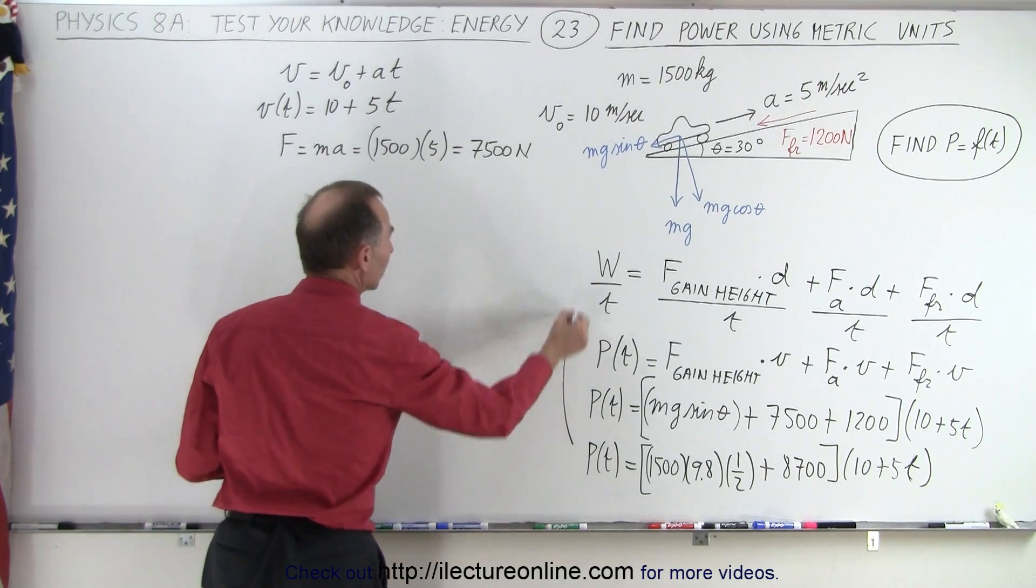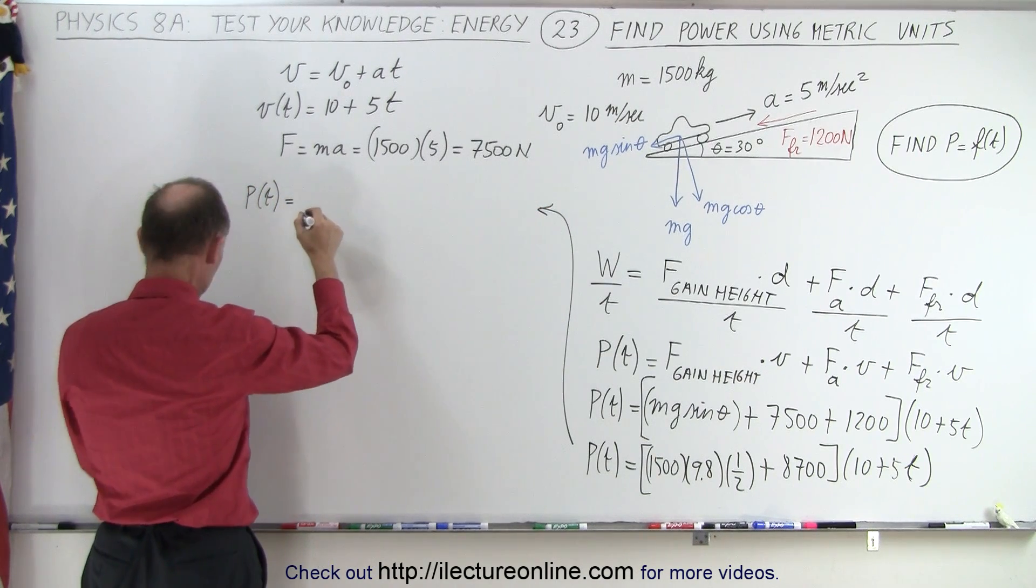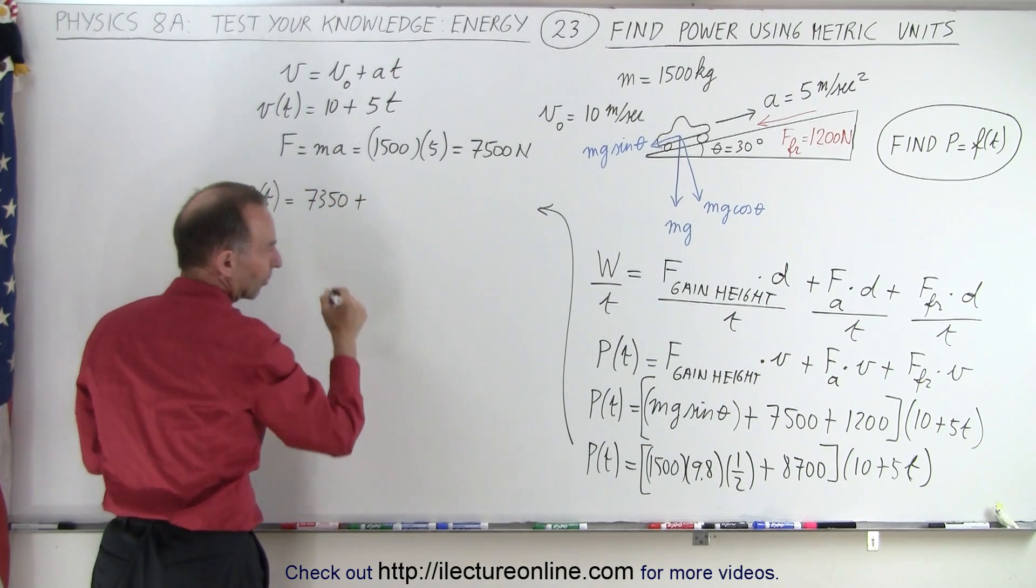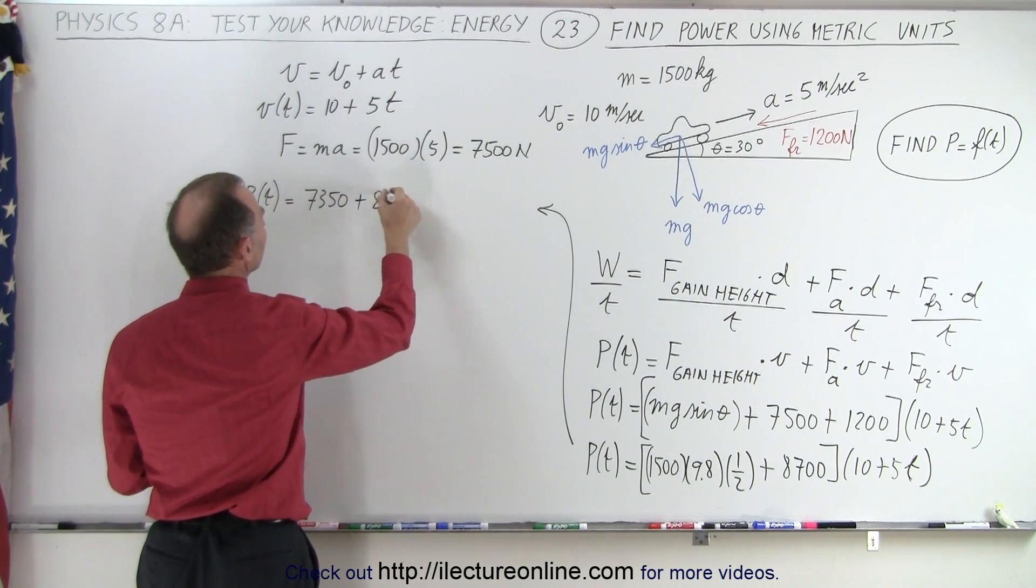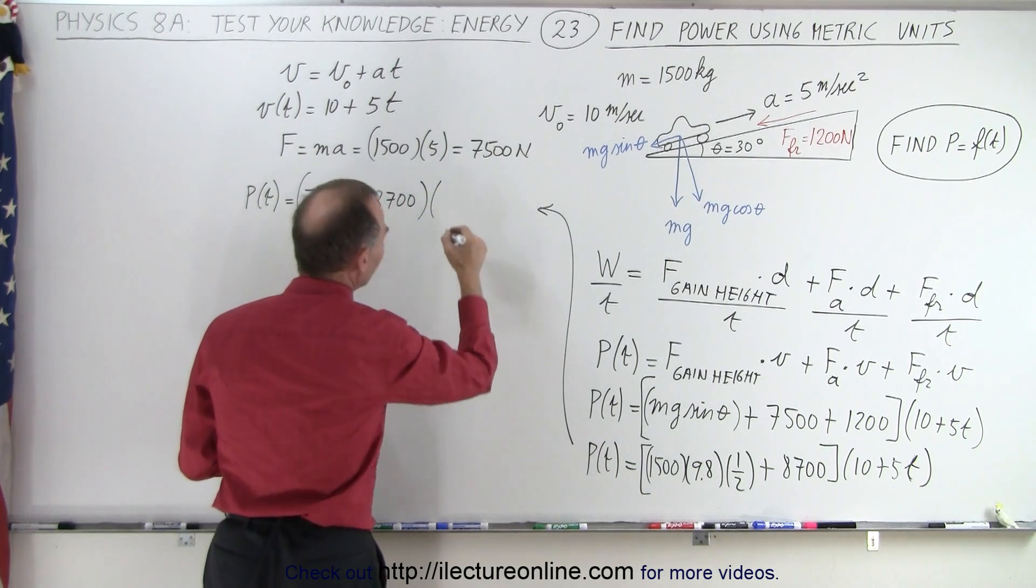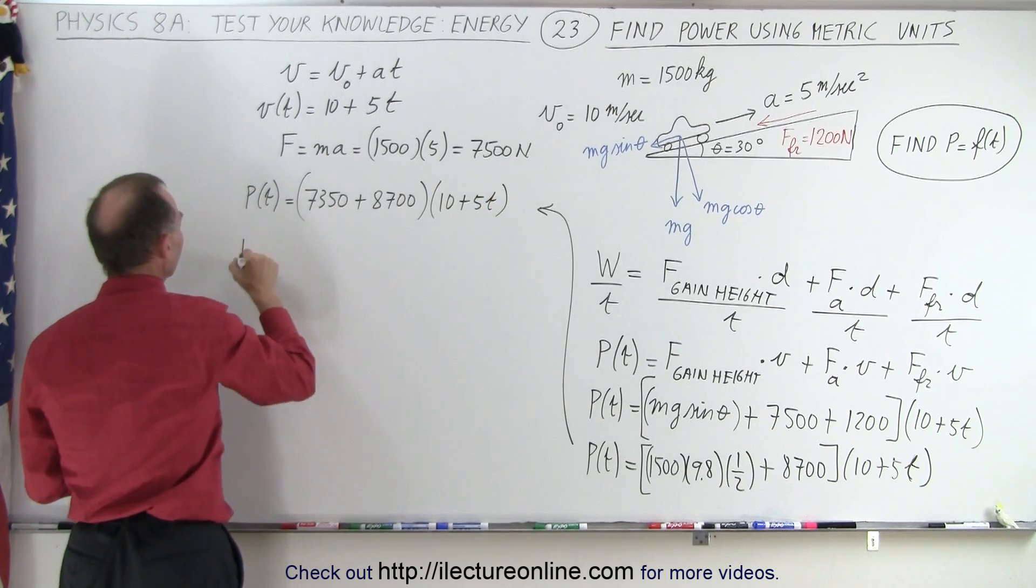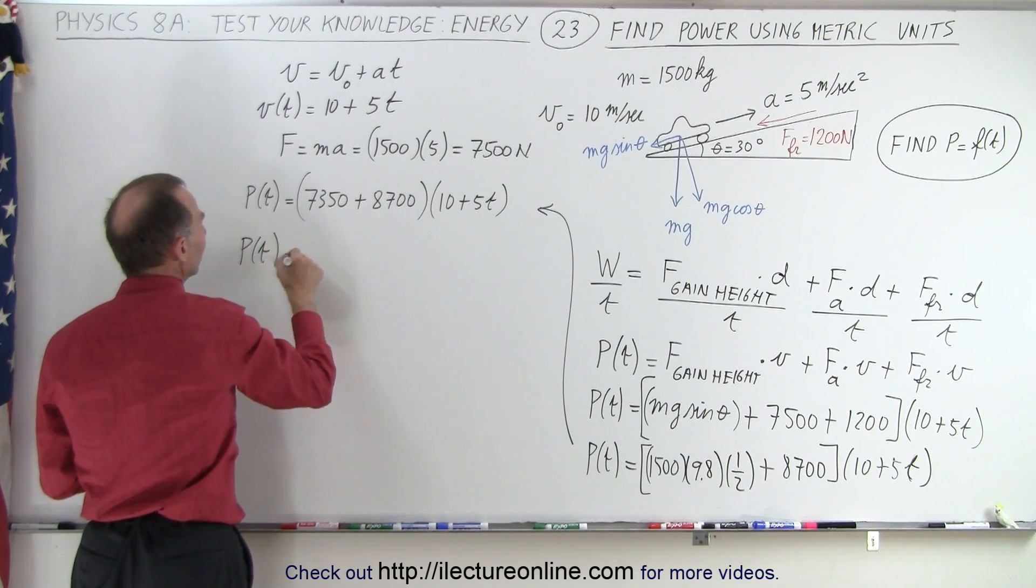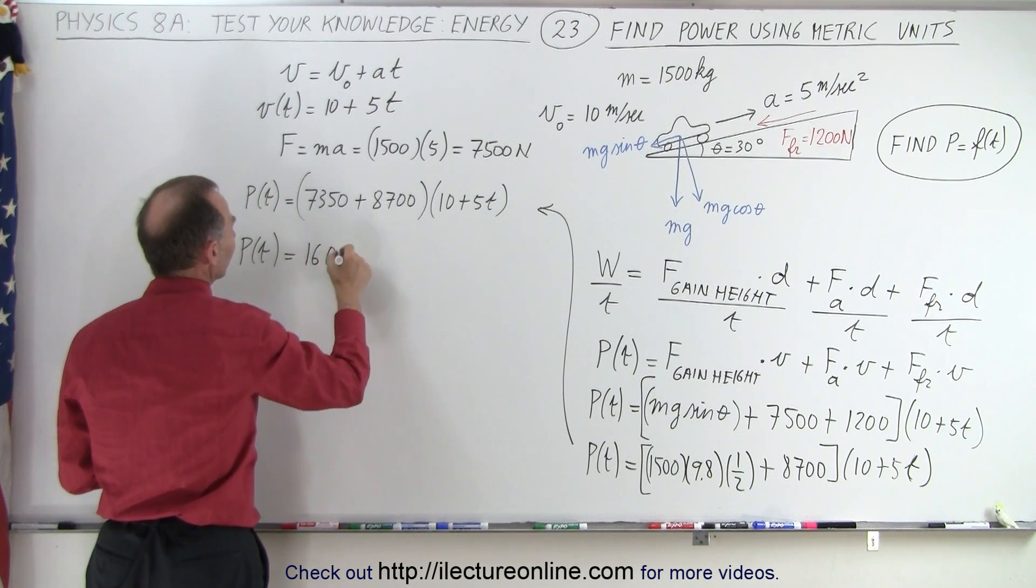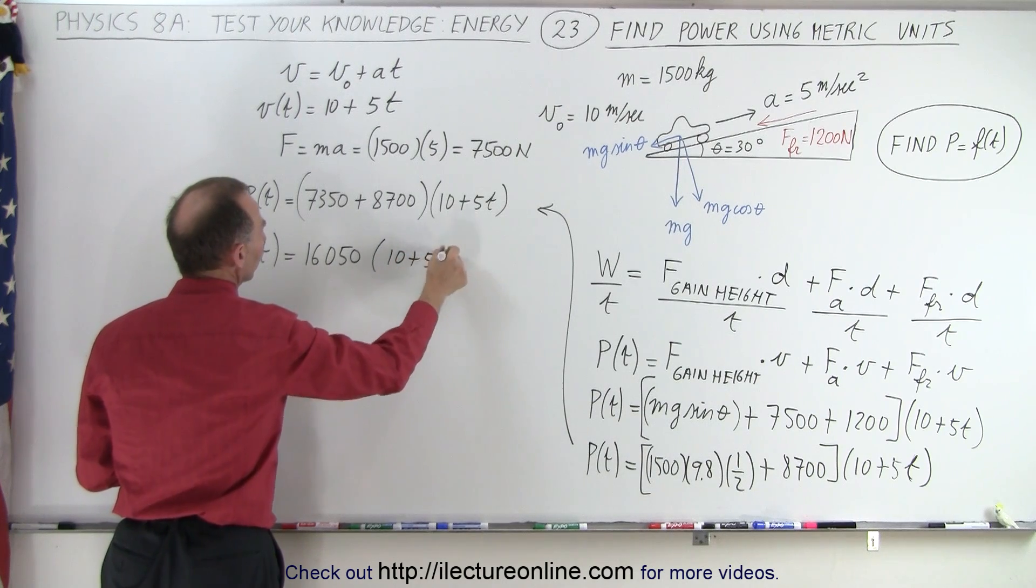So continuing, power as a function of time is equal to 7,350 plus 8,700, multiplied by velocity, which is 10 plus 5t. Or finally, adding that together gives us 16,050 times 10 plus 5t.